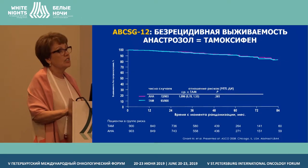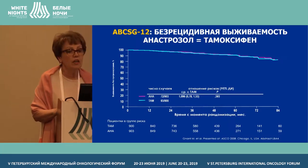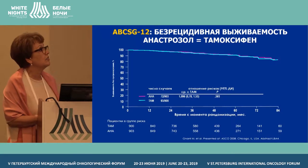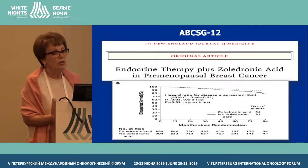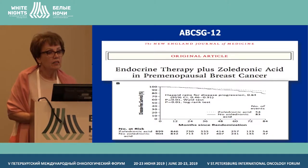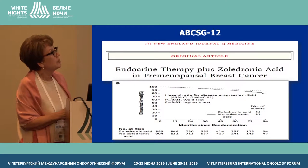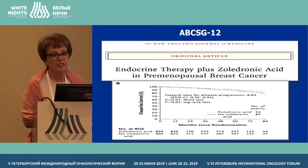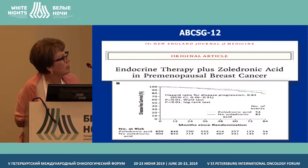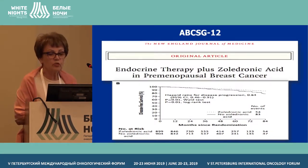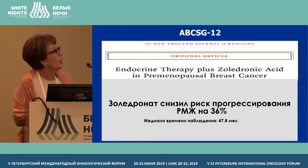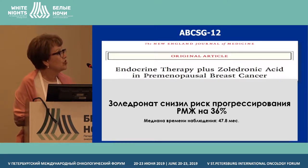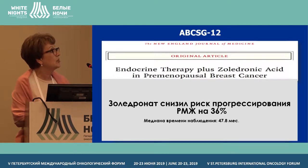ABCHG12 relapse-free survival: the difference between anastrozole and tamoxifen was not found — these two medications give a similar effect. Looking at results in the group with zoledronic acid versus without it in terms of survival without progression, the difference is in favor of those groups which received zoledronic acid, though the results are not statistically significant.